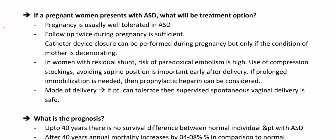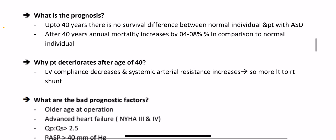If a pregnant woman presents with ASD, what is the treatment option? Pregnancy is usually well tolerated in ASD; follow-up twice during pregnancy is sufficient. Catheter device closure can be performed during pregnancy only if the mother's condition is deteriorating. In women with residual shunt, risk of paradoxical embolism is high; use of compression stockings and avoiding the supine position is important. If prolonged immobilization is needed after delivery, prophylactic heparin can be considered. Supervised spontaneous vaginal delivery is safe.